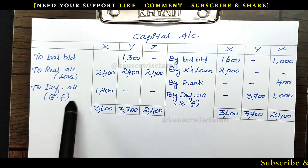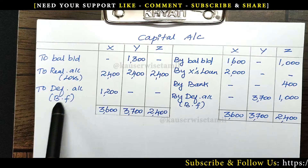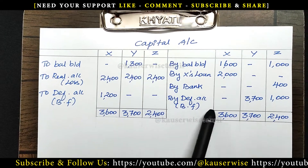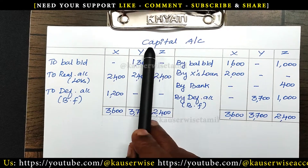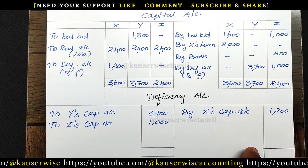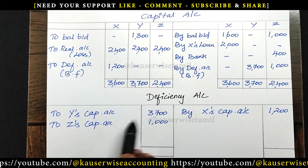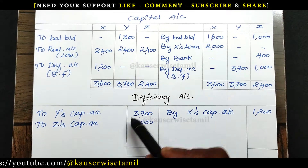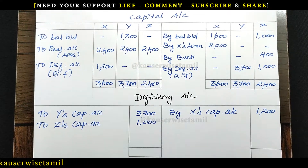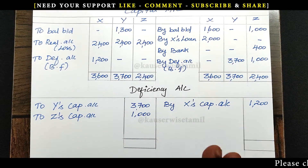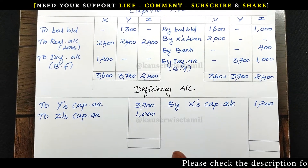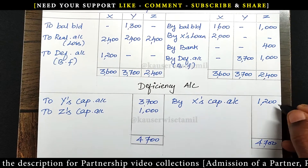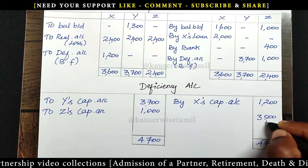The balancing figure for X on the debit side is 1200 — this is the deficiency to be transferred. For Y, the balancing figure is 3700 rupees deficiency. These deficiency amounts are transferred to the deficiency account. After preparing the capital account, we now prepare the deficiency account.